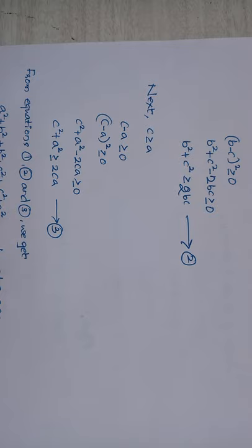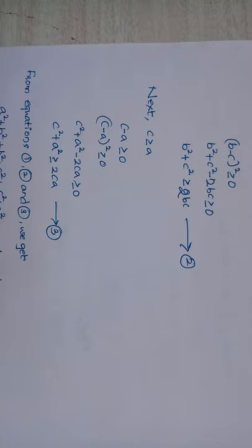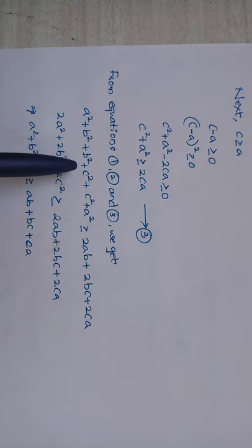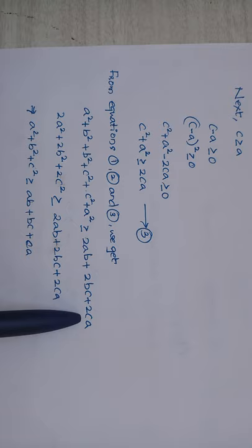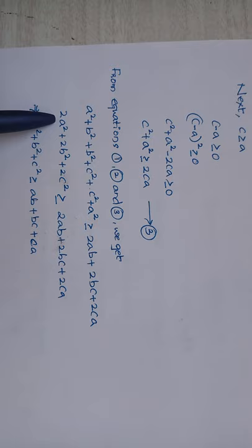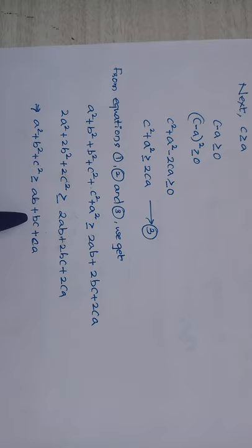From equations 1, 2, and 3: a² + b² ≥ 2ab, b² + c² ≥ 2bc, and c² + a² ≥ 2ca. Adding all three: 2a² + 2b² + 2c² ≥ 2ab + 2bc + 2ca. After dividing by 2 on both sides, a² + b² + c² ≥ ab + bc + ca. This is the solution.